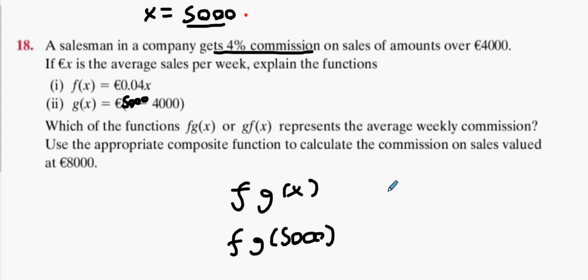What does that represent? This function represents the money that you actually earn the commission on. Does that make sense? This function means the money you make the commission on, or the money over €4000 that you make the commission on.